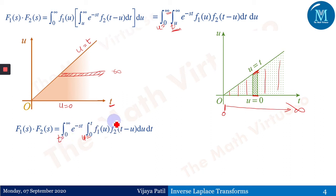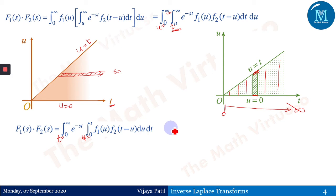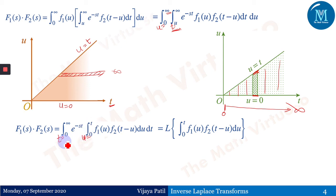After changing the order of integration, u goes from 0 to t and t goes from 0 to infinity. The integrand remains unchanged — only the order of integration has been swapped. So we now have: integral from 0 to infinity of e^(−st) times the inner integral from 0 to t of f1(u)·f2(t−u) du, all dt.